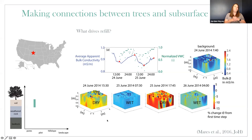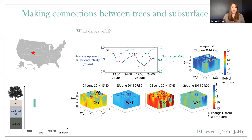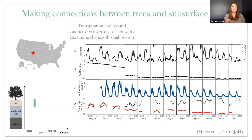They collapsed hundreds of time-slice measurements of this plot down to a single point to get an average apparent bulk conductivity of the soil. In the next image, that electrical conductivity measurement is shown across the bottom row — the collapse of hundreds and hundreds of measurements in the soil. Above that is sap flux averaged from a few surrounding trees, then soil moisture and vapor pressure deficit, which is the potential the air has for sucking moisture out of a plant — closely related to ET.